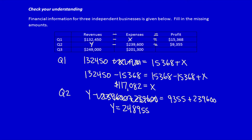Finally, let's solve for z. This one's the easiest: 249,000 minus 201,300 is equal to 47,700. So notice, no matter which one is unknown, we can solve for the unknown number.